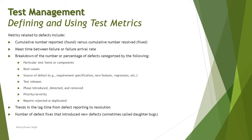Mean time between failures, or failure arrival rate, is another metric — measuring the duration between two different defects found in a particular cycle. For example, if a defect is found today and the next found tomorrow, that is 24 hours of mean time between failures. If a defect is found every single hour, that is a concern because a lot of rework, retesting, and regression testing will be required. Another metric is the breakdown of the number or percentage of defects categorized by different categories.